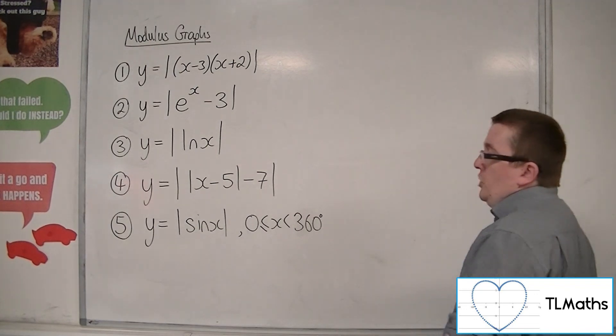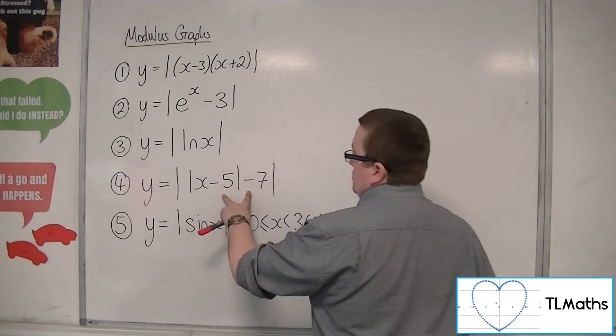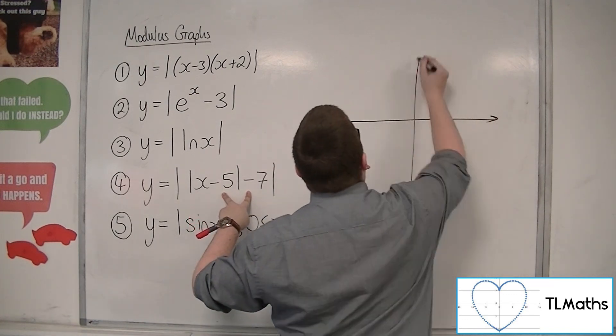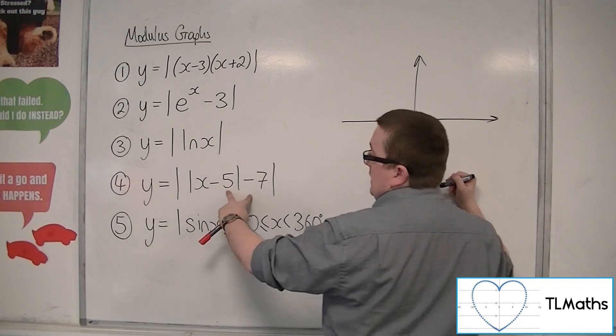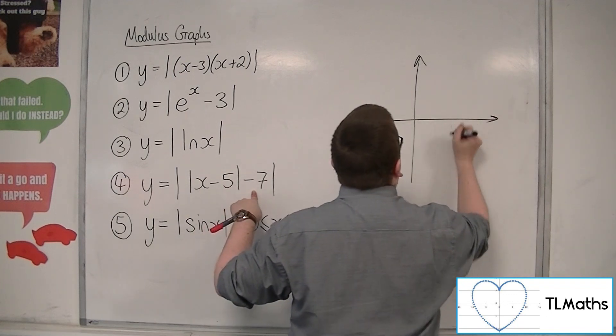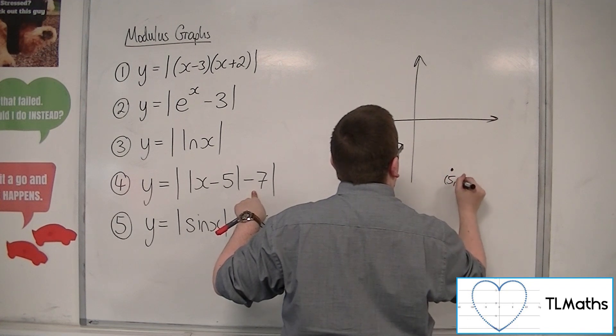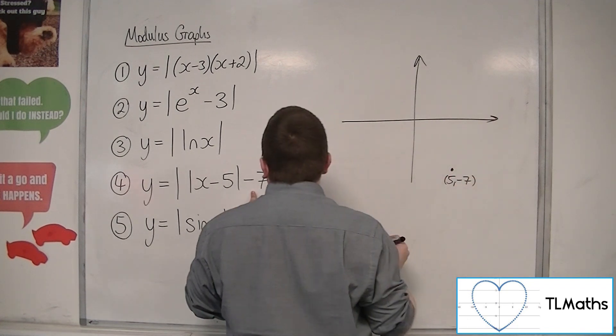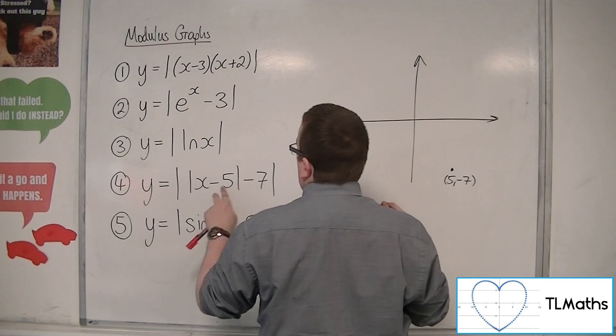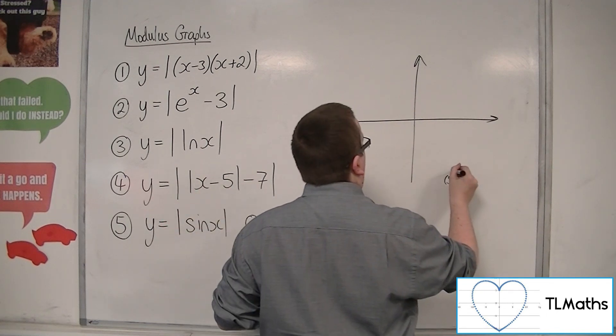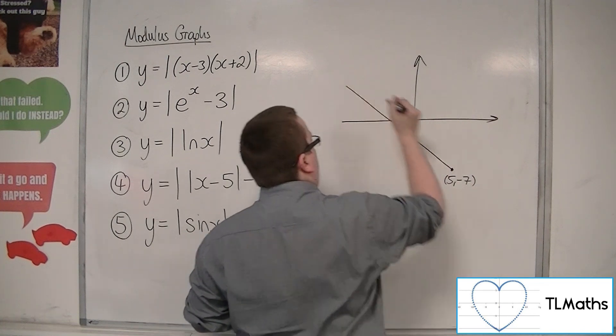Now, y equals the modulus of mod x minus 5 minus 7. So if I sketch y equals mod of x minus 5 minus 7 first, so that would be vertex at 5 minus 7. So 5 minus 7, so somewhere down here. And so it would look like when x is 0, we would have 5 take away 7, so minus 2. So go something like this.